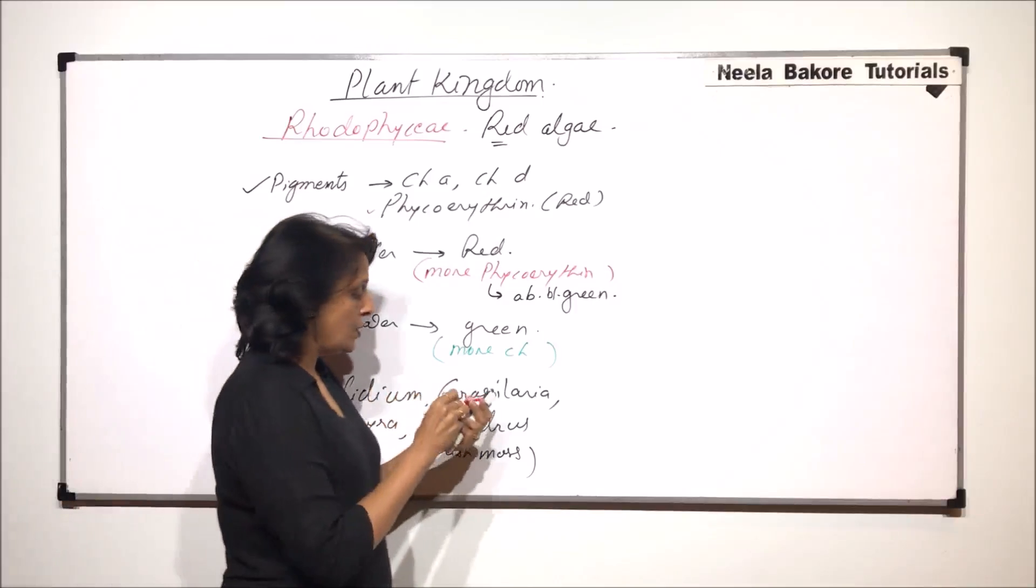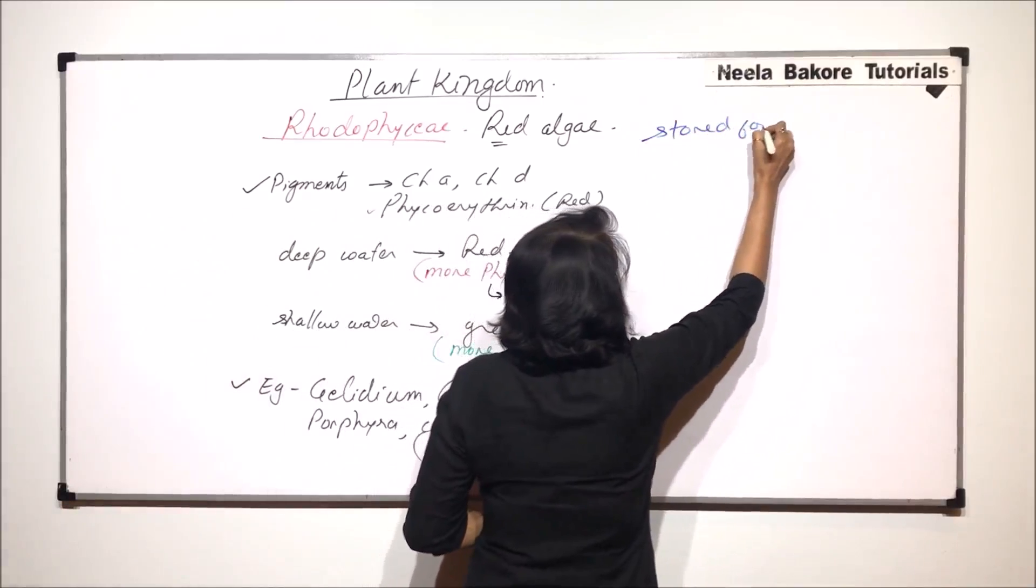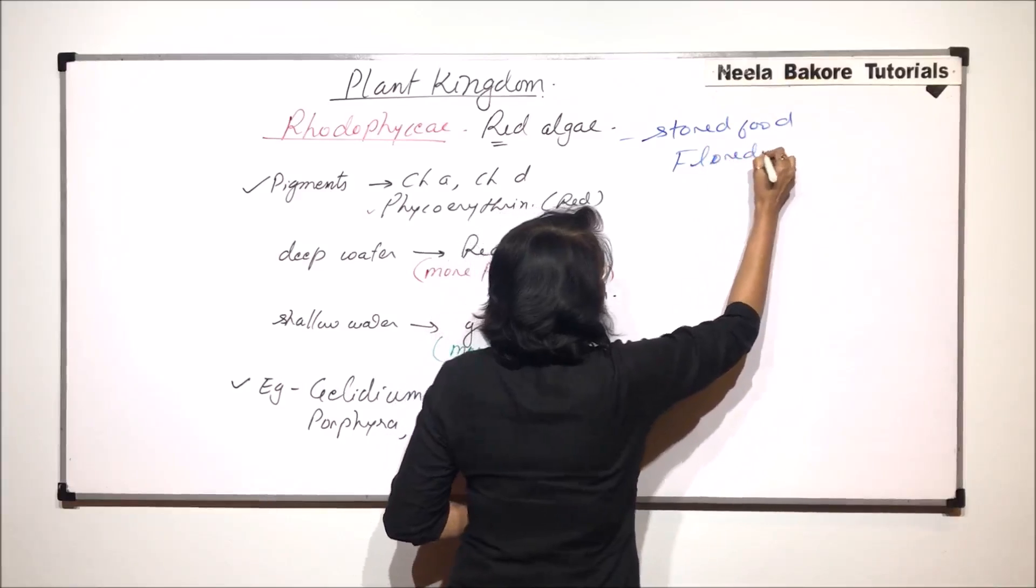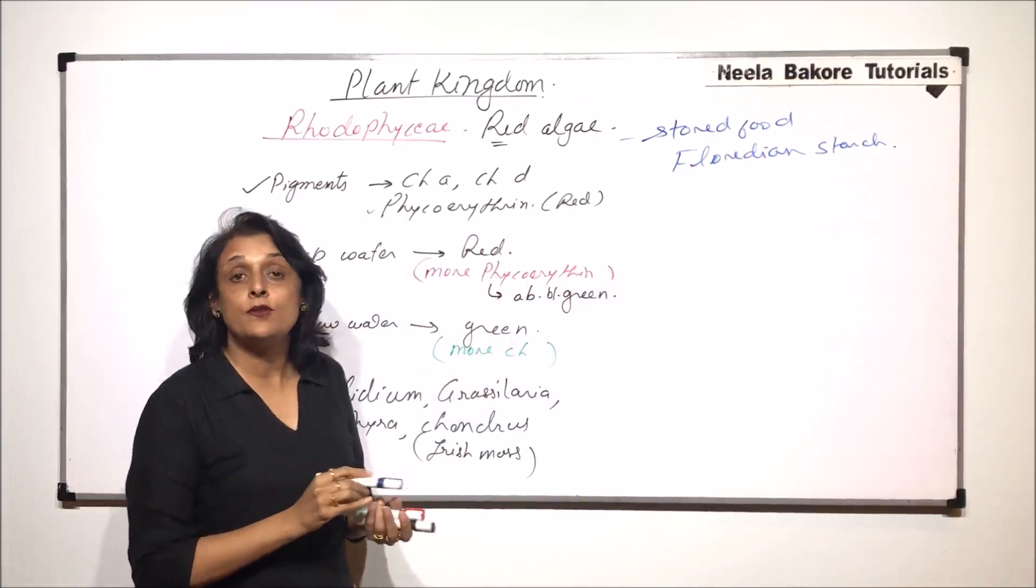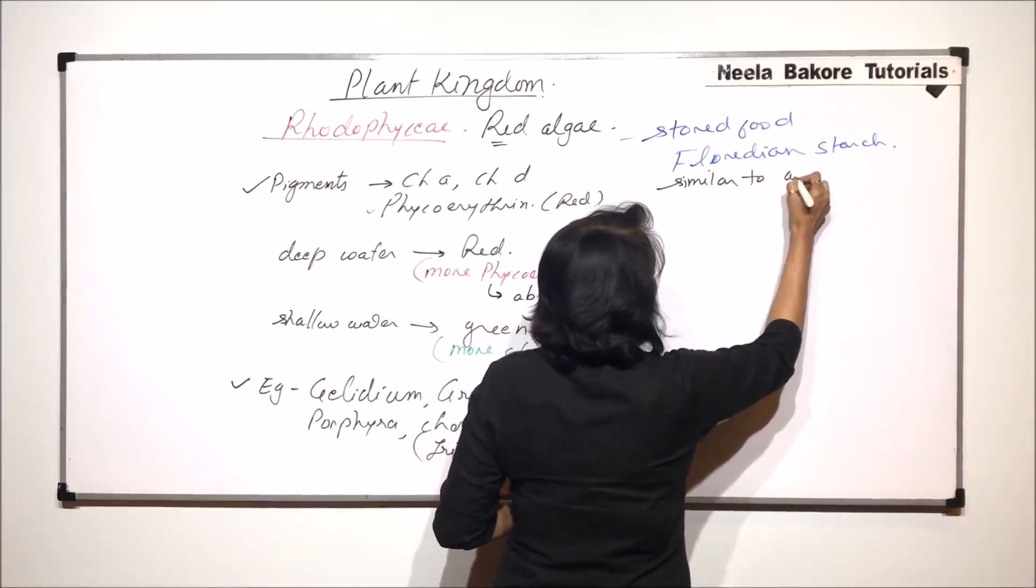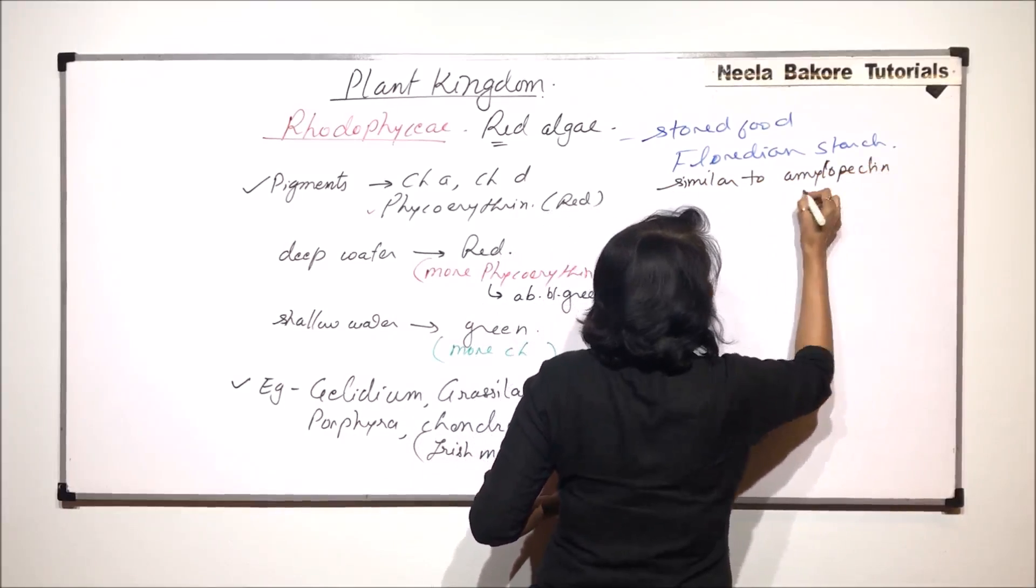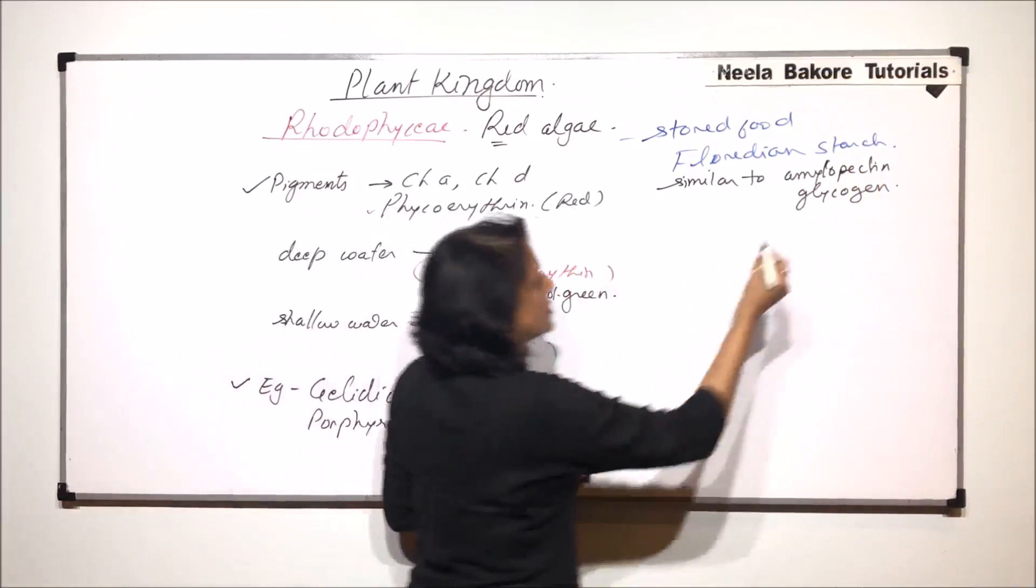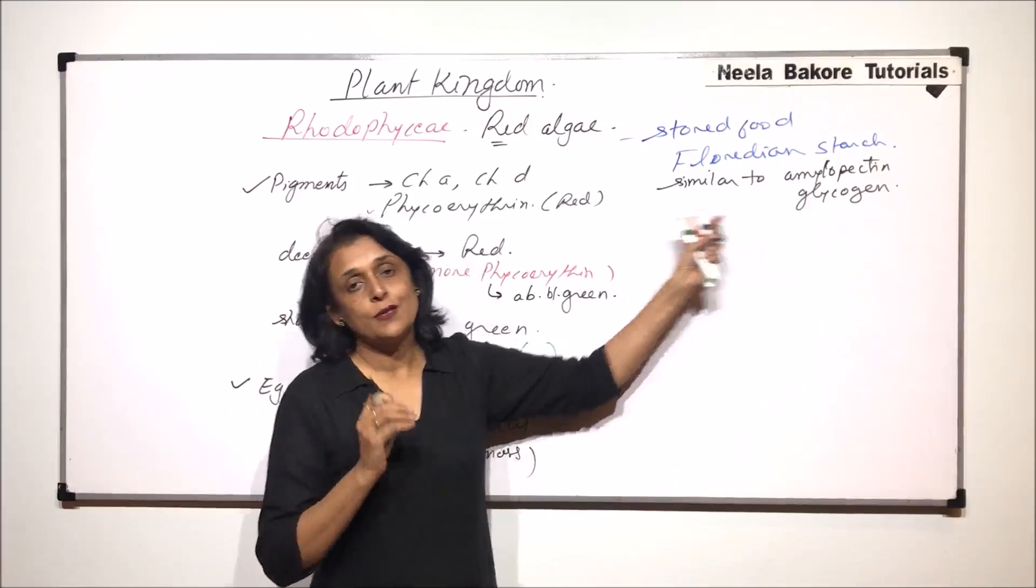Now, in case of red algae, the stored food material is in the form of fluoridium starch. This fluoridium starch is a carbohydrate which resembles or is very much similar to amylopectin and glycogen. So it is similar to these two substances that is amylopectin which is a component of starch and glycogen.